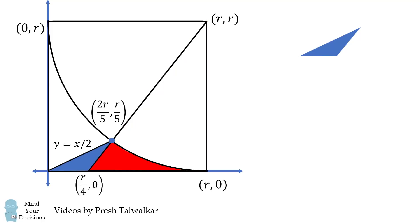We can now use this coordinate to figure out the area of this blue triangle. Its base will be R over 4, and its height will be R over 5, as you can see from the coordinates of the blue point. So the area of this triangle will be 1 half times its base times its height, and that simplifies to be R squared over 40.